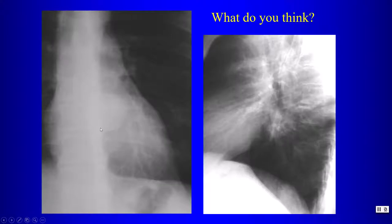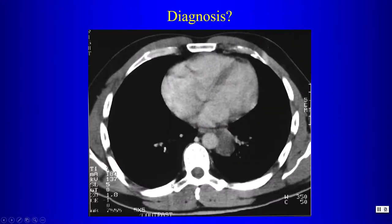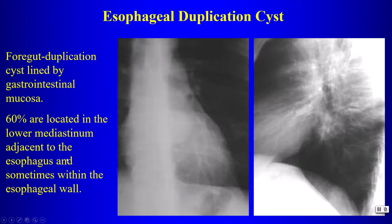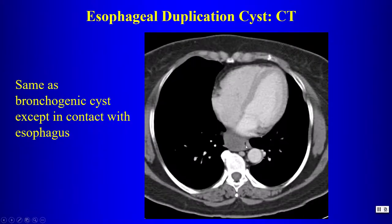Next case: a rounded lesion behind the heart, seen in the middle mediastinum on lateral view. On CT it is fluid attenuation but is located somewhat lower than a typical bronchogenic cyst and is in contact with the esophagus — this is an esophageal duplication cyst. Esophageal duplication cysts are foregut duplication cysts lined by gastrointestinal mucosa, located in the lower mediastinum adjacent to or within the esophageal wall.